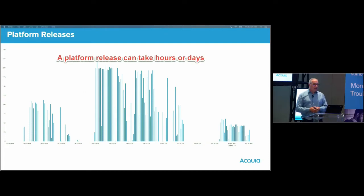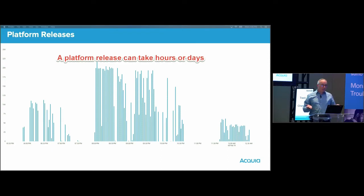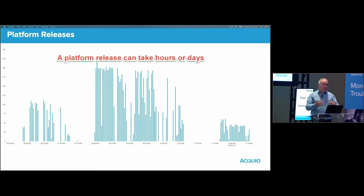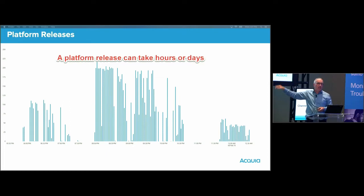Let's spend a couple of minutes looking at the anatomy of a platform release. A platform release for Acquia may require no manual intervention, it may require that web services are restarted, or it may even require a reboot — depends what we're doing. Depending on the amount of manual intervention, it can take hours or days to release an update to several thousand hosts. This chart represents a single platform release that occurred earlier this year, and the time range is about 12 hours. Each column is the number of hosts that were updated in a two-minute period. I'm going to show you relative charts, so you don't need to know the absolute numbers.